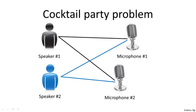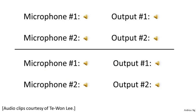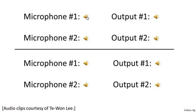Each microphone records an overlapping combination of both speakers' voices. Here's an actual recording of two speakers recorded by a researcher. What you just heard was the first microphone recording, and here's the second recording. What you can do is take these two microphone recordings and give them to an unsupervised learning algorithm called the cocktail party algorithm, and tell the algorithm to find structure in this data. The algorithm will listen to these audio recordings and say it sounds like there are two audio recordings that are being added together to produce these recordings.